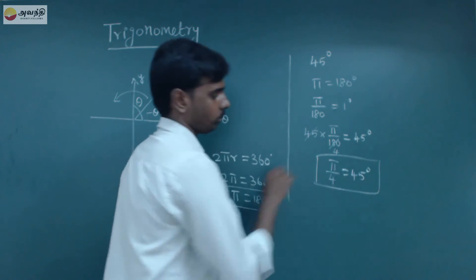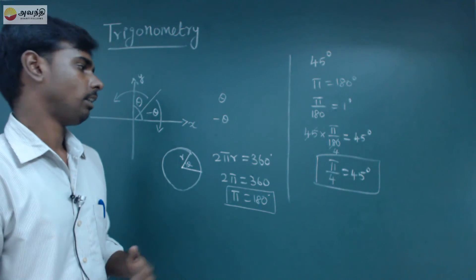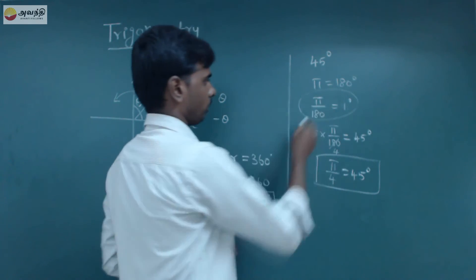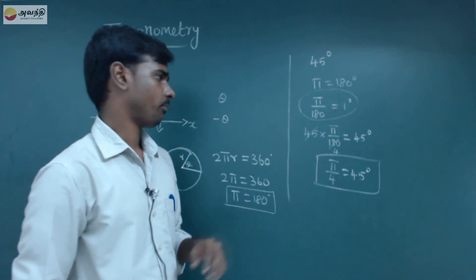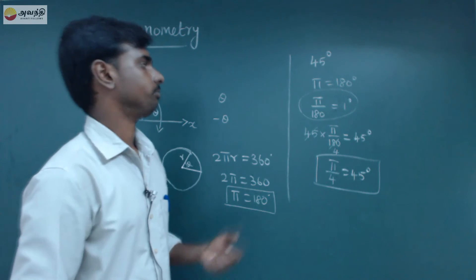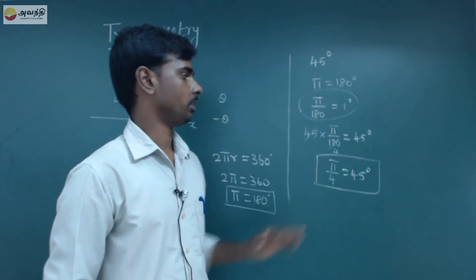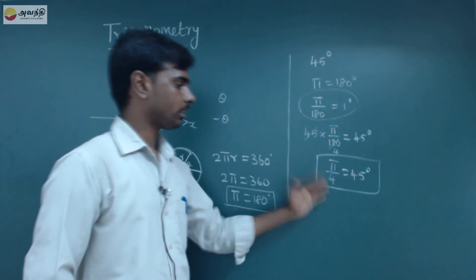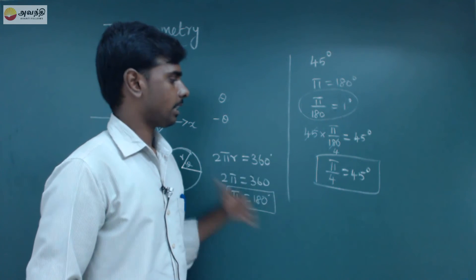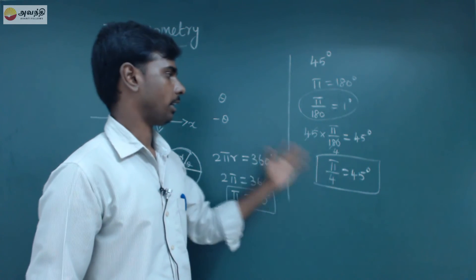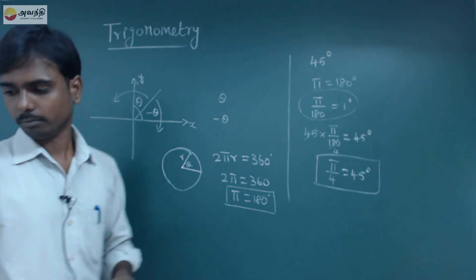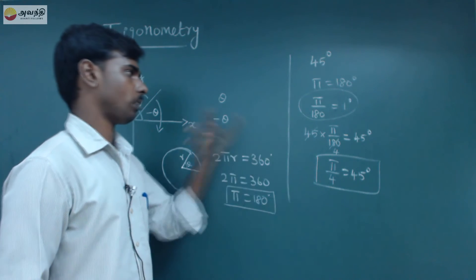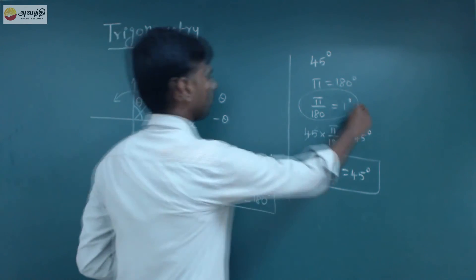So we have a degree value. This is how to convert to radian using the formula: what we need to do is take the degree value and change it to the radian value. If you are given a value in degrees, you can convert it to radians, and if you are given a value in radians, you convert it to degrees using this formula.